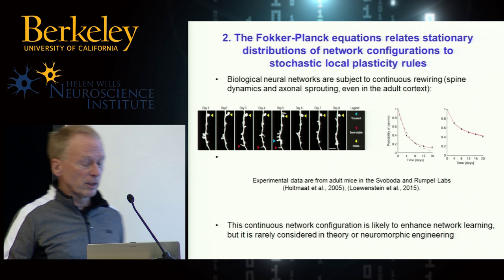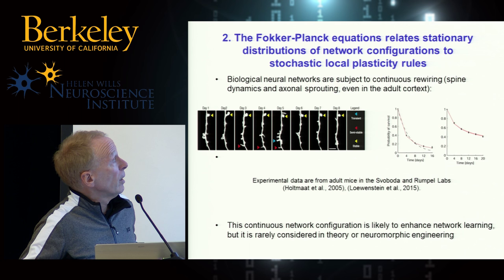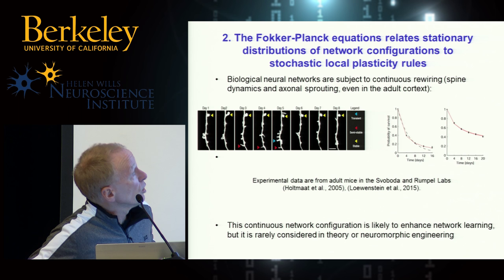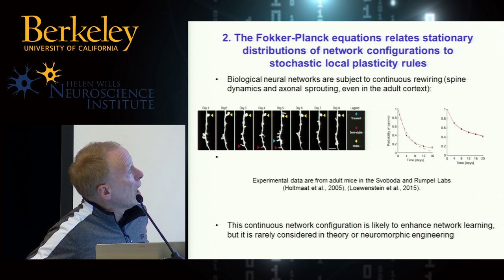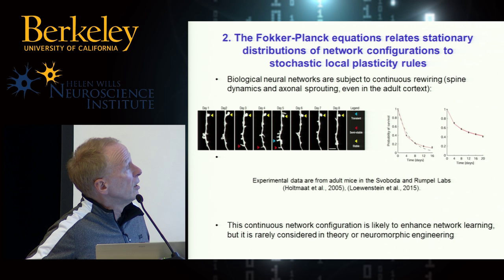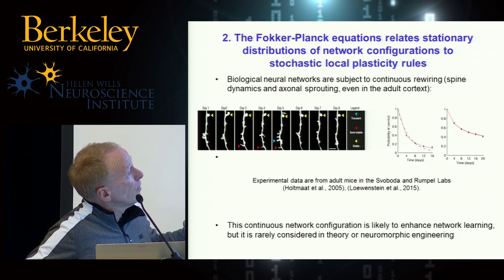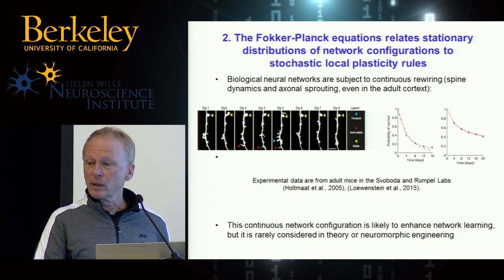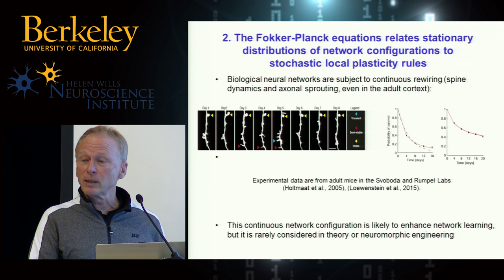One motivation is the continuous spine dynamics and rewiring seen in biology. From a paper by Loewenstein et al. in PNAS, new spines observed in one session mostly disappear — after eight days only about 20% survive. In adult mouse cortex, after about five days half of the existing synaptic connections are lost. The argument of the researchers is that this happens all the time in adult brains and is not specific to development, and there are probably processes that regulate the speed of this.